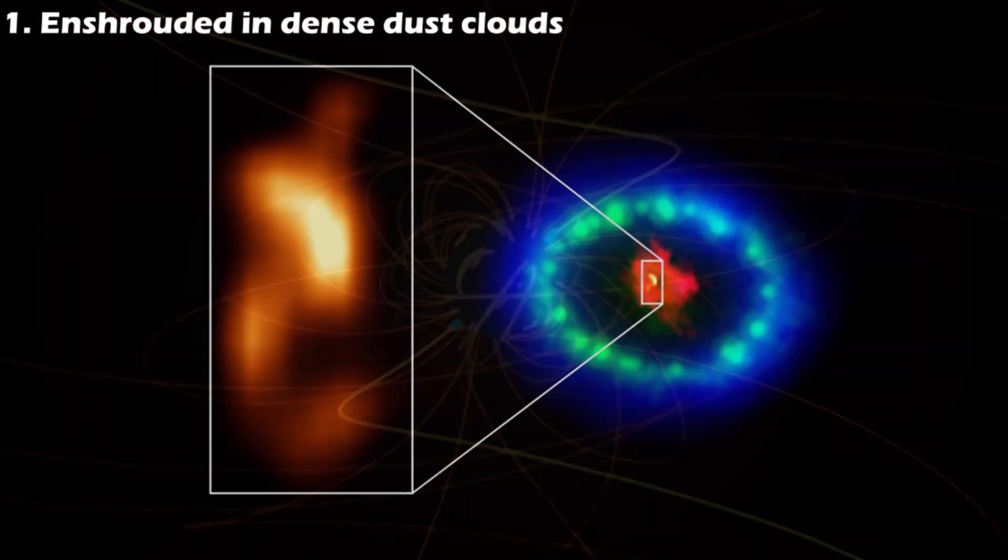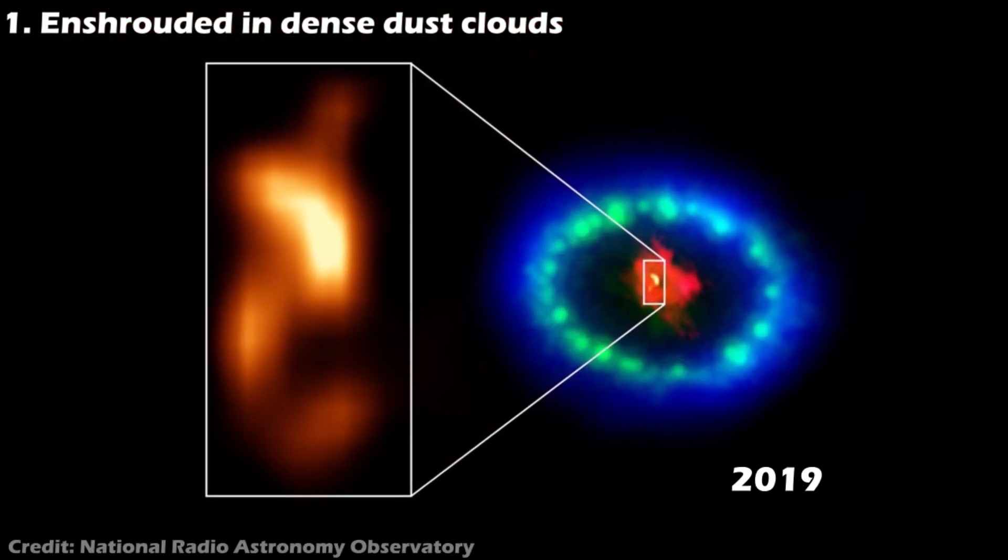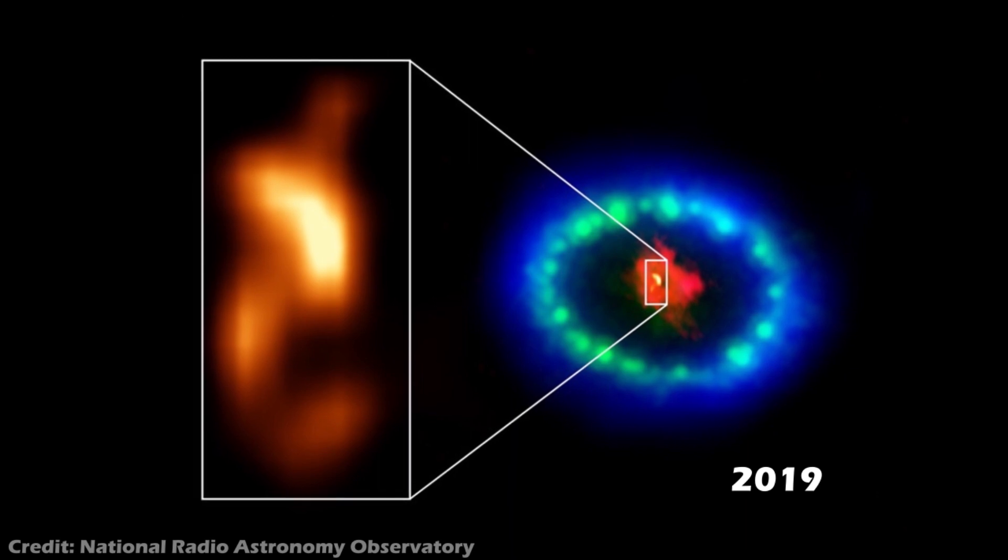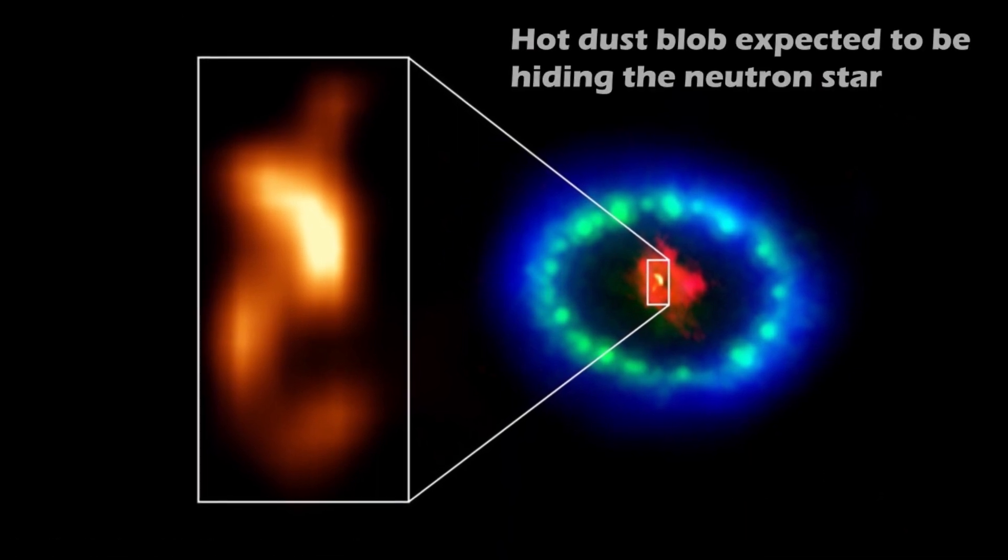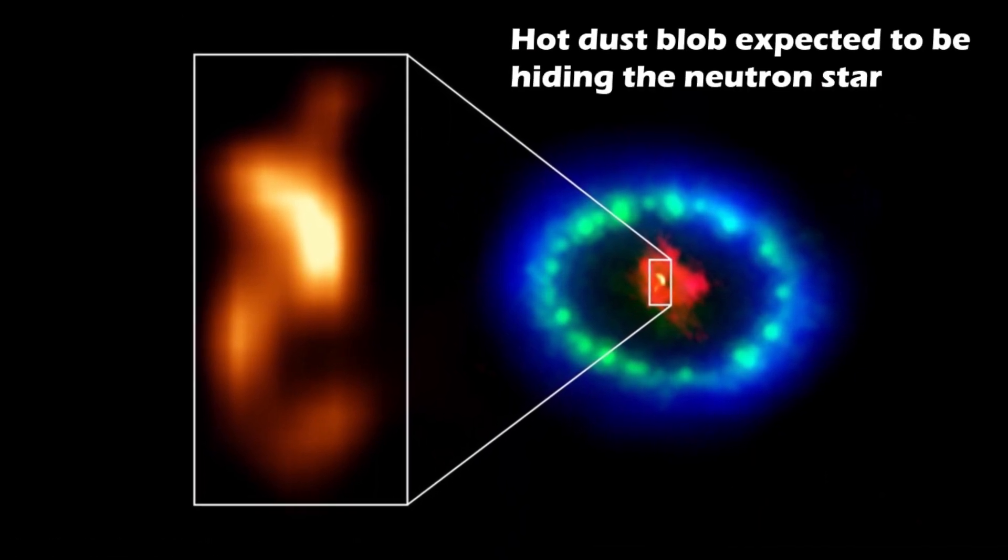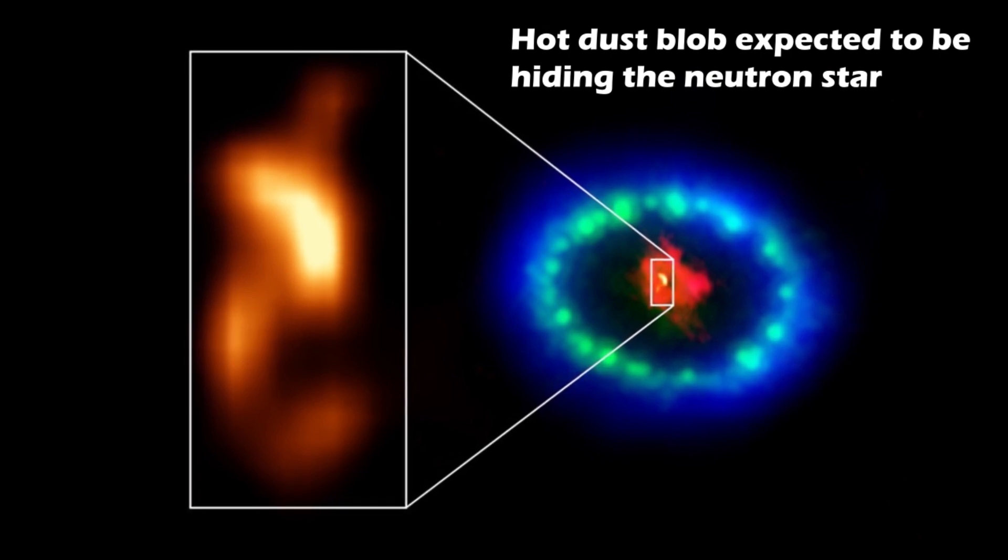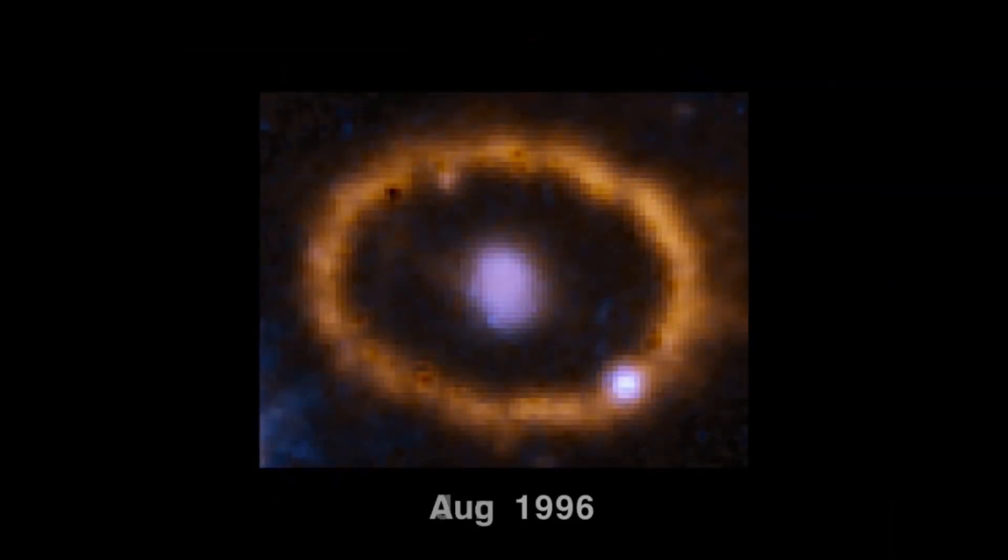However, to everyone's relief, in 2019, evidence was presented that a neutron star was inside one of the biggest dust clumps close to the expected position of the supernova remnant. We have seen the supernova evolve over the years.